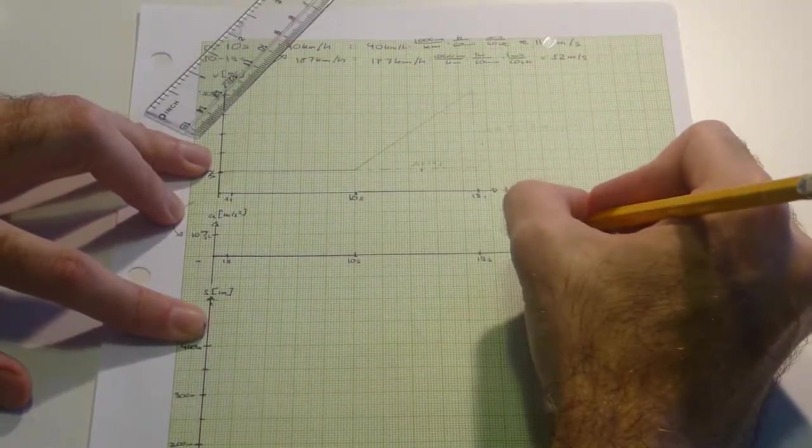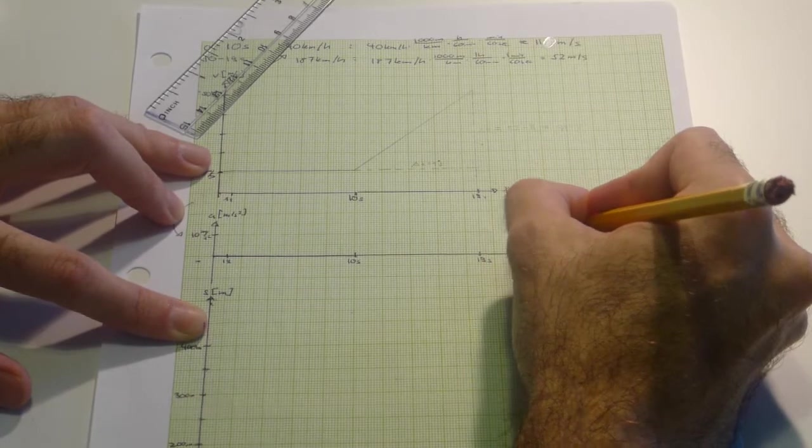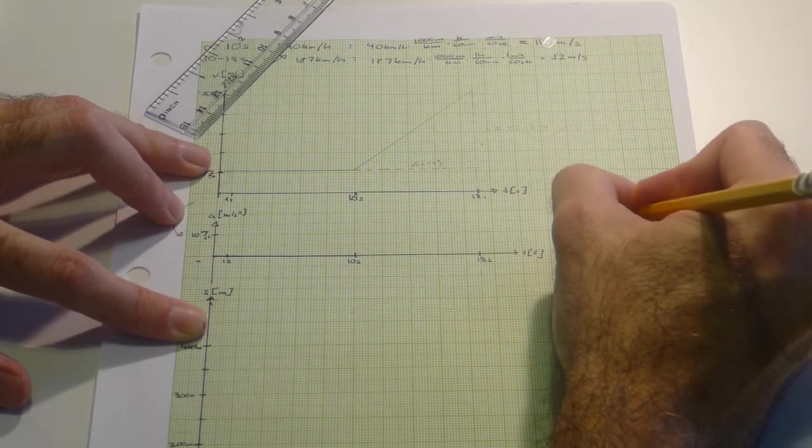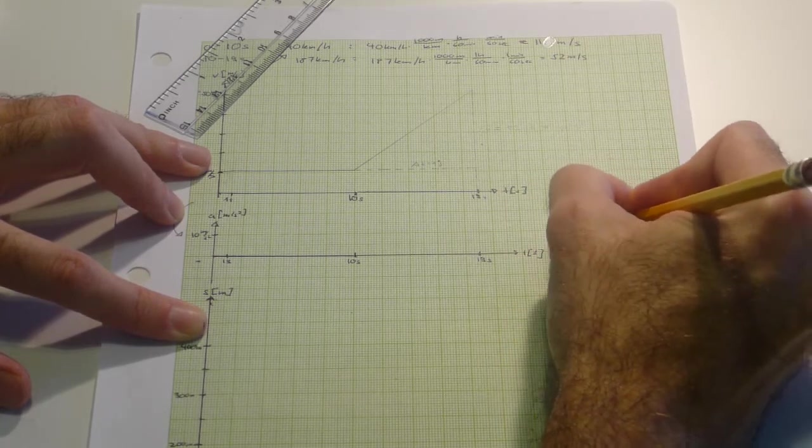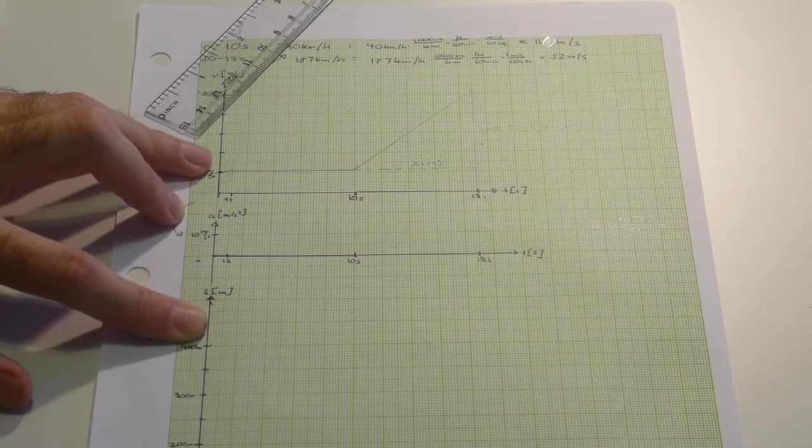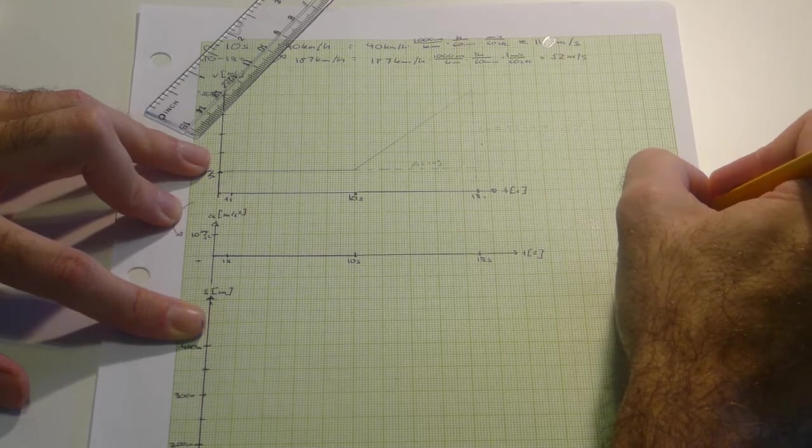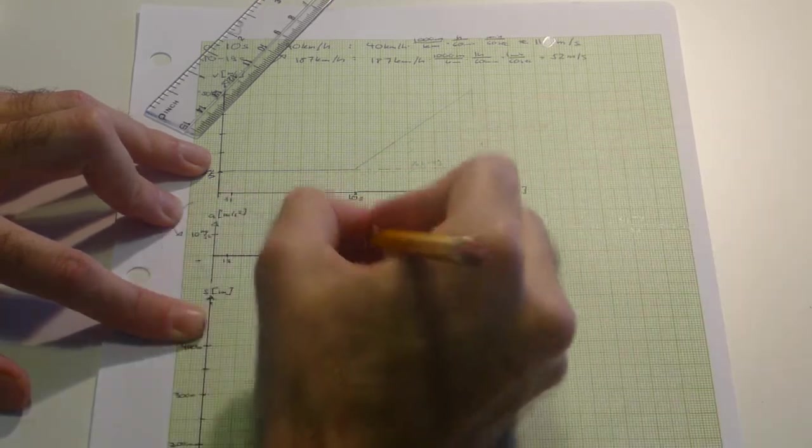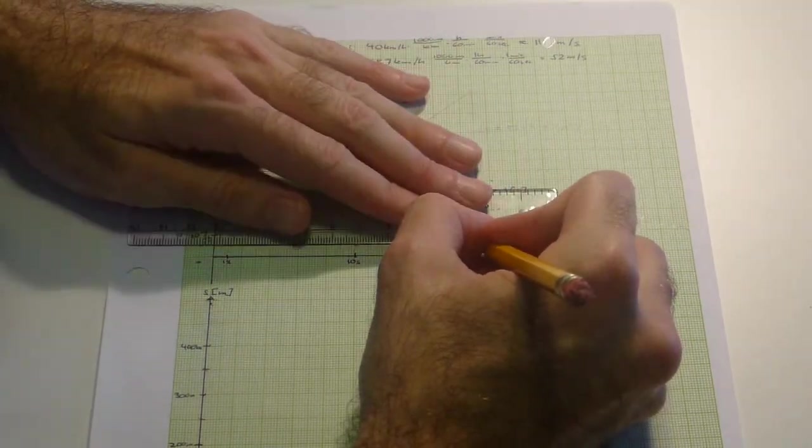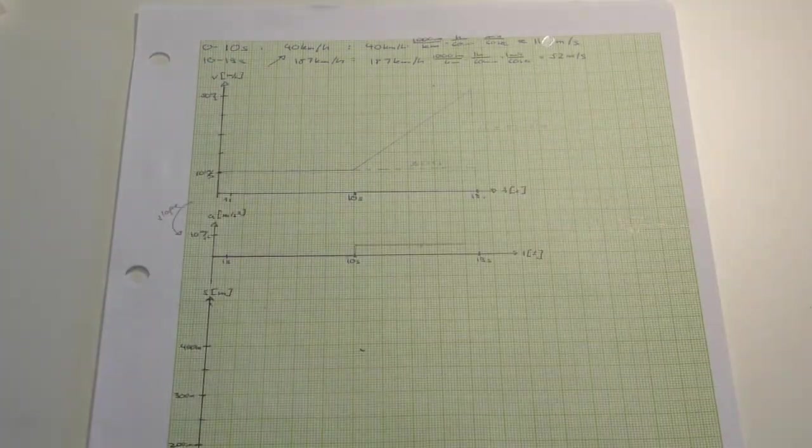Therefore our acceleration which is constant from 9 to 10 because the slope was constant here is delta V over delta T which is 41 meters per second divided by 9 seconds which gives us 4.5 meters per second squared. So here we go up here, and our AT graph is done.